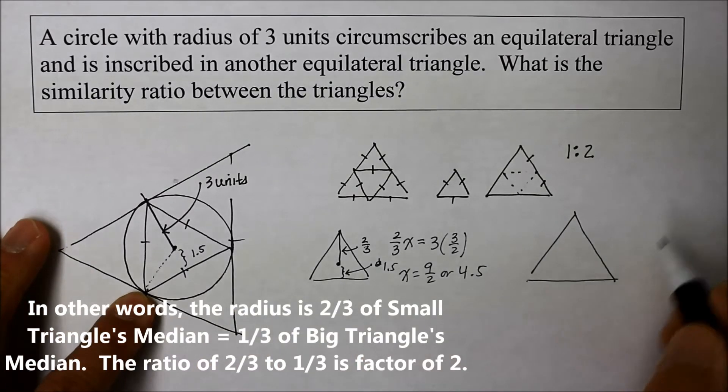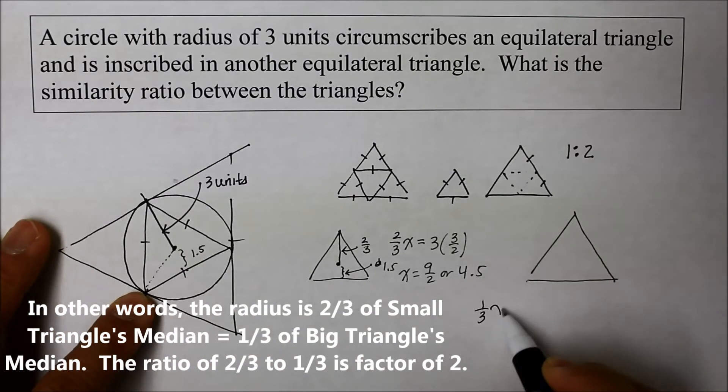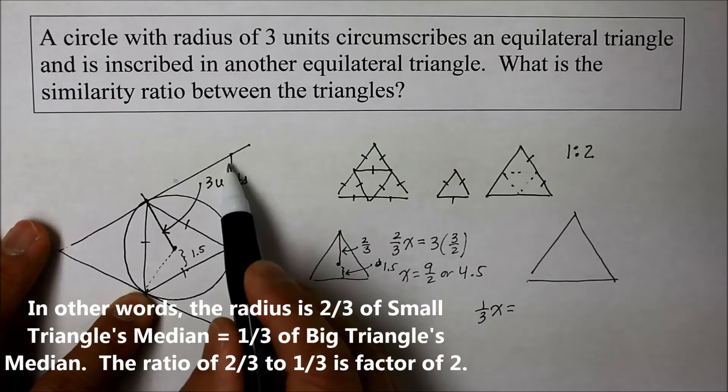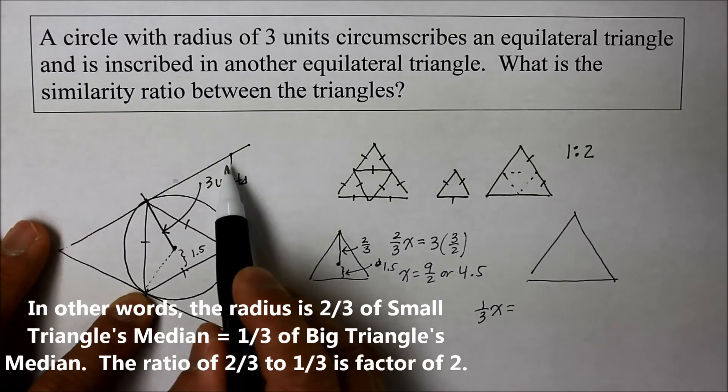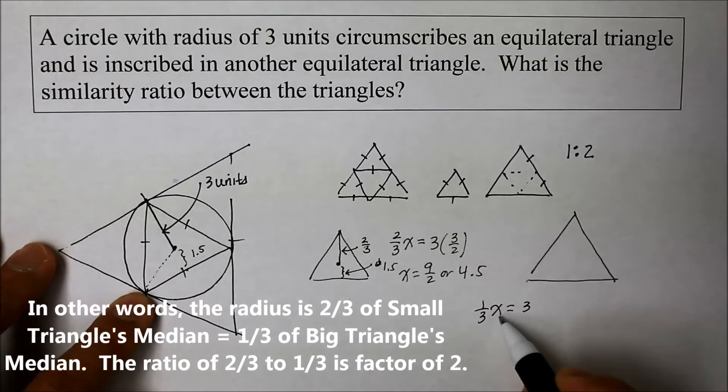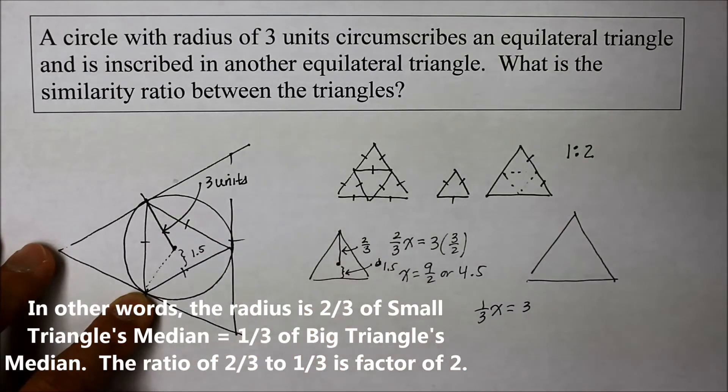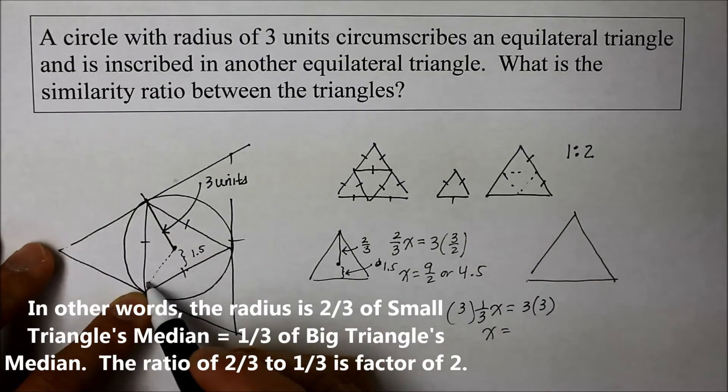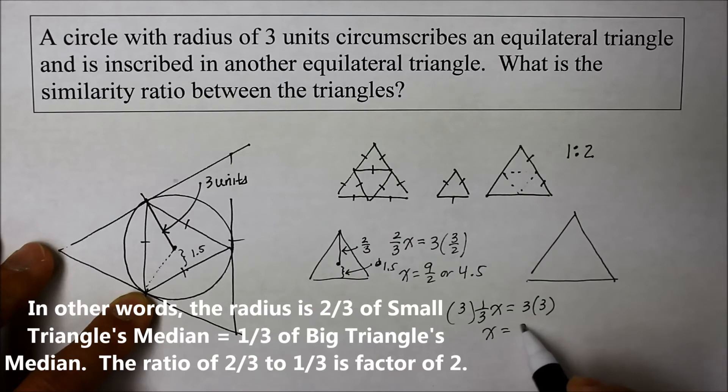So one-third of the x of a bigger triangle is a three. Then if I find the x, it's going to be the full length of the bigger one. So multiply the reciprocal of the one-third, and it turns out the full length of the median of a bigger triangle is in fact nine.